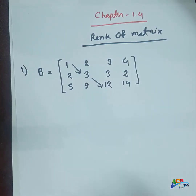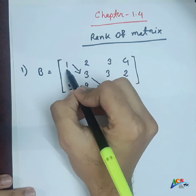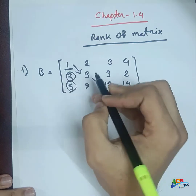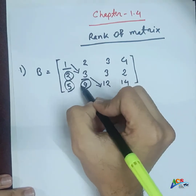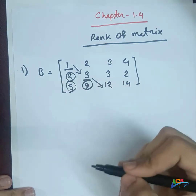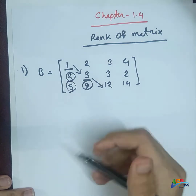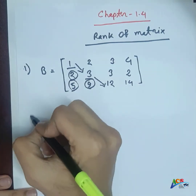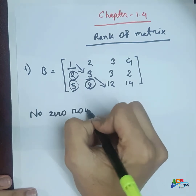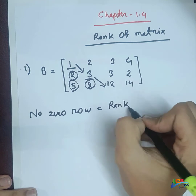Both the first and diagonal elements need to be handled. I'm going row by row — first row, second row, third row — diagonal-wise. The rank will be equal to the number of non-zero rows after the row reduction process. Non-zero rows give us the rank.